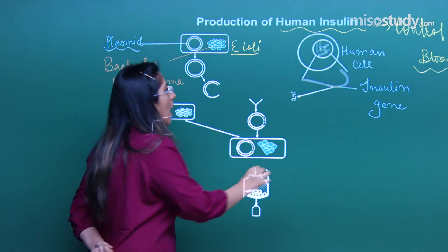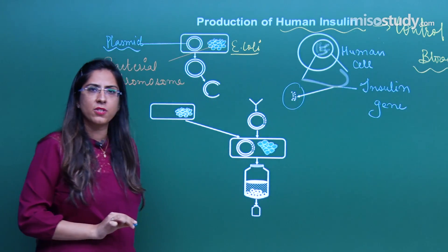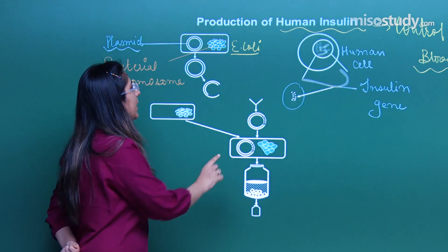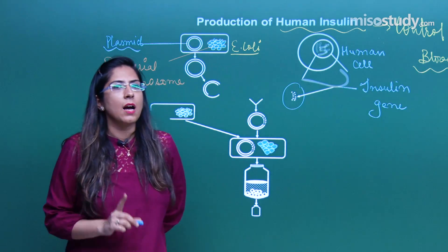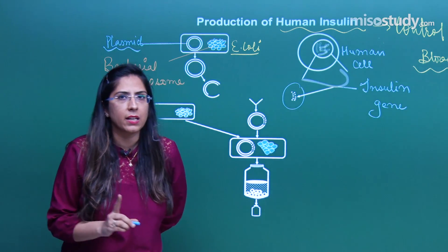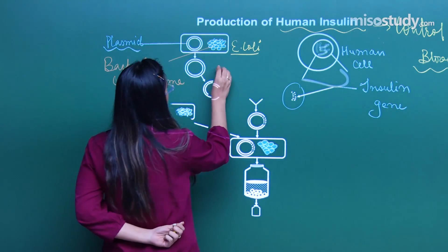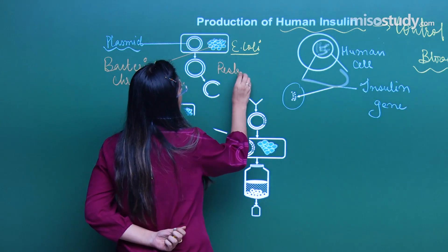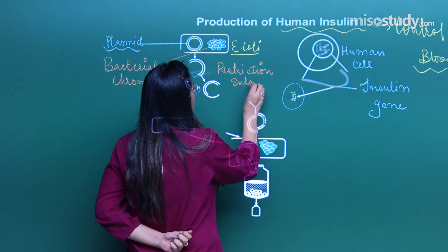Now what I will do? I will take out that particular gene which is responsible for production of insulin. Similarly, I will take this vector. What I will do next? I will treat both of these DNA with restriction endonucleases.